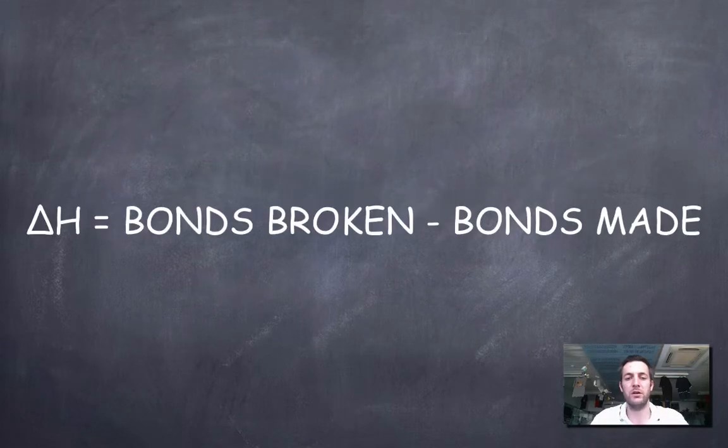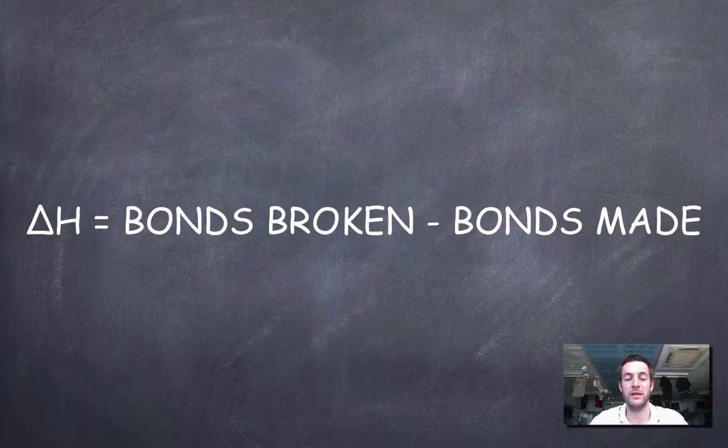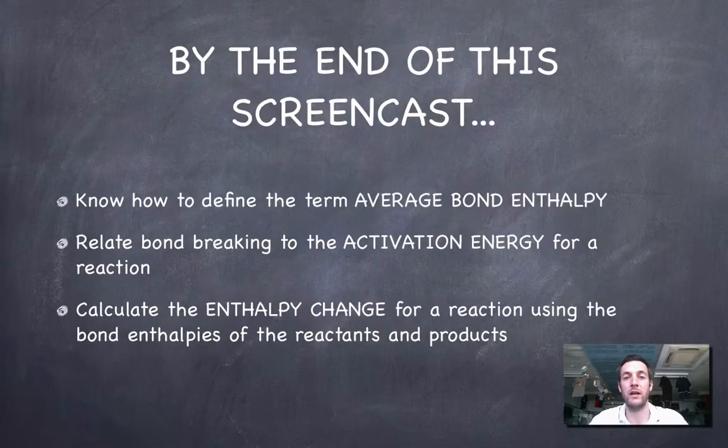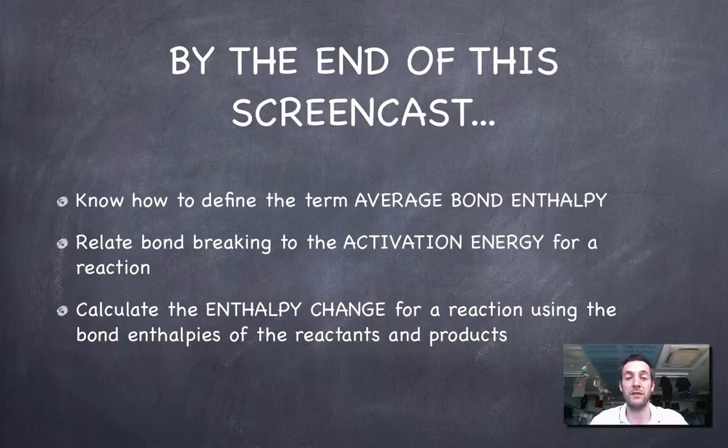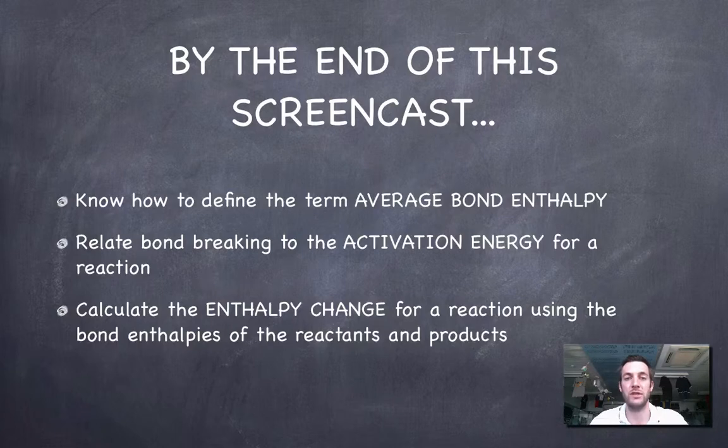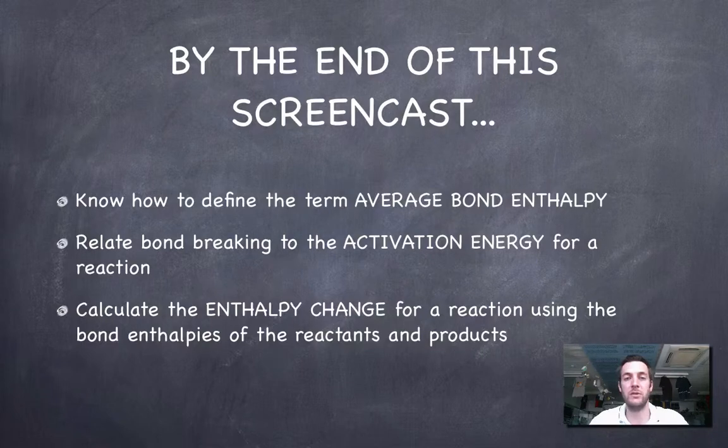Well, there was quite a lot covered there, but I suppose one of the most important things was that formula there on the screen and that is that the enthalpy change is the bonds broken minus the bonds made. But hopefully, in addition to that, you also know how to define average bond enthalpy, you know what the activation energy is and how it's related to bond enthalpies, and you can also calculate the enthalpy change using that formula we just saw on the screen. As usual, any questions or comments, please come along and see me or post a comment on YouTube.